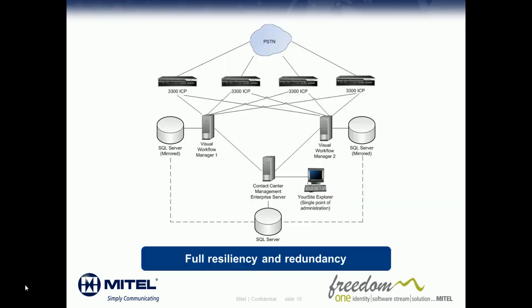Now let's take a look at how this works. In this example, we have four 3300 ICP controllers with calls interleaved between telephone systems and remote standalone instances of Visual Workflow Manager. You'll notice that each Visual Workflow Manager instance has a SQL Server instance containing a mirror of the data configured on the enterprise server. You'll also notice that the site explorer application can be run on a supervised desktop as a single point of administration and configuration for the entire IVR network configuration. Ports are interleaved to distribute 50% of the call traffic from each controller to each Visual Workflow Manager instance, and each instance has an equal number of active and redundant ports.